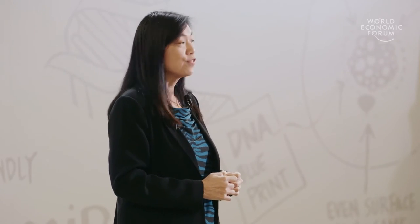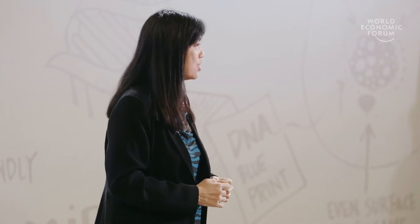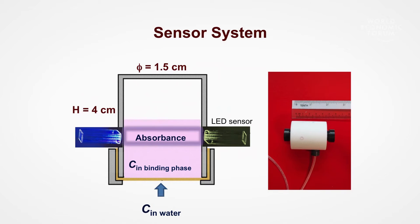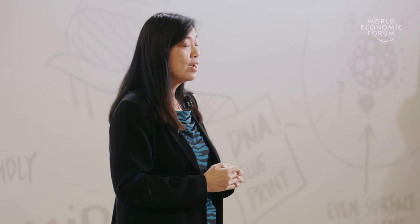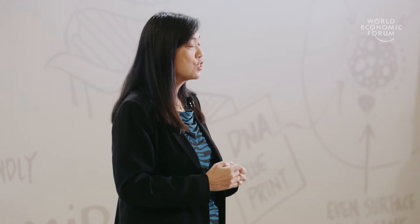Next, we have to measure the amount of captured phosphorus. This is done by adding a color reagent, which changes the color of the solution according to how much phosphorus is present. We use two LED lights and a spectrophotometer to measure the change in light absorbance or color. The greater the change in absorbance, the greater the amount of phosphorus.